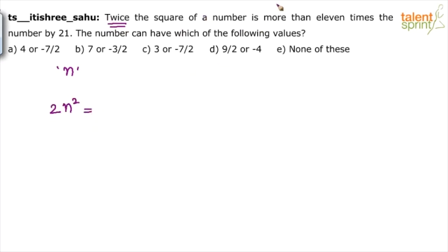Is means equal to. This is more than 11 times the number by 21. Now what is 11 times the number? 11N. So this 2N square is more than 11N by 21. So basically this is the equation. 2N square equals to 11N plus 21.